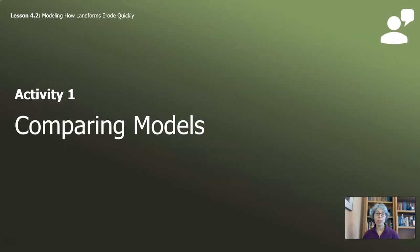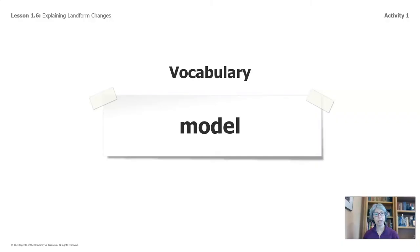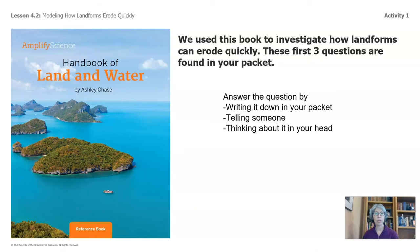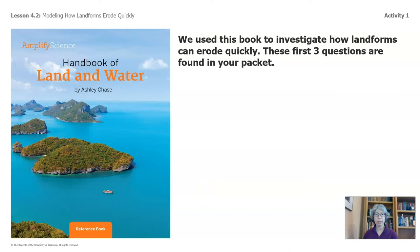This video has two activities, and we will start with comparing models. Let's talk a little bit about the word model and how scientists use it. Models in science are something that scientists make to answer questions about the real world. Since we're studying how landforms change quickly, we can't really look at a landform as it's changing, so we have to use a model to represent what's happening. We'll use this book to investigate eroding quickly. There are three questions in your packet — go ahead and pause the video to answer them.